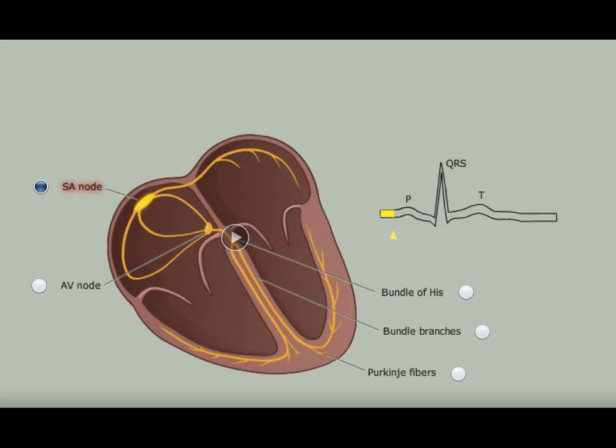The cardiac conduction system is the electrical wiring of the heart. Specialized cells in the conduction system initiate depolarization of the heart and allow rapid spread of electricity to trigger depolarization and contraction of cardiac myocytes.